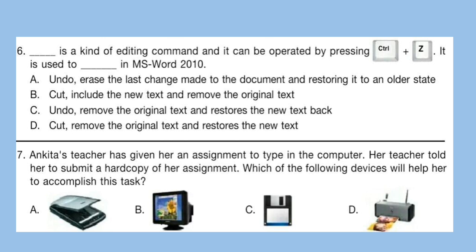Question 7: Ankita's teacher has given her an assignment to type in the computer. Her teacher told her to submit a hard copy of her assignment. Which of the following devices will help her accomplish this task? Look at the options and select your answer. The correct answer is option D — Printer.